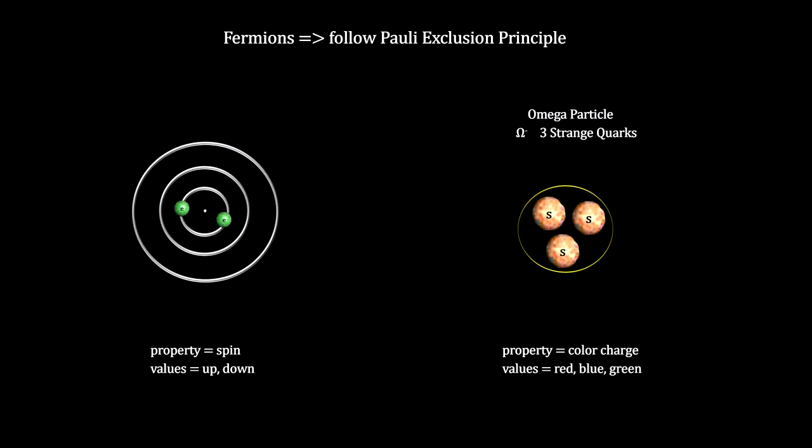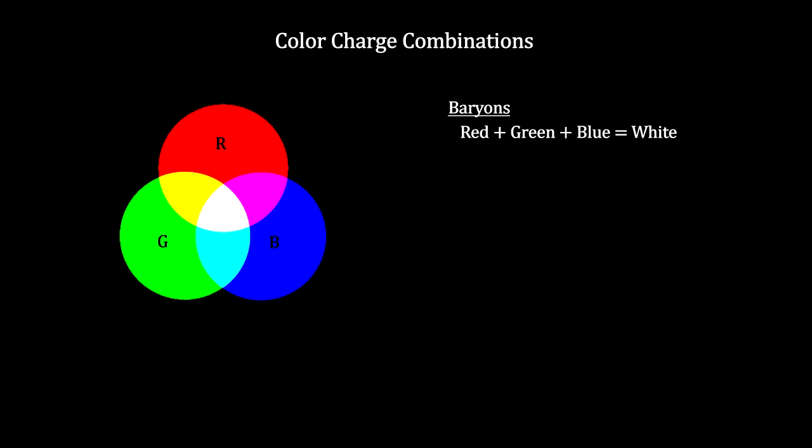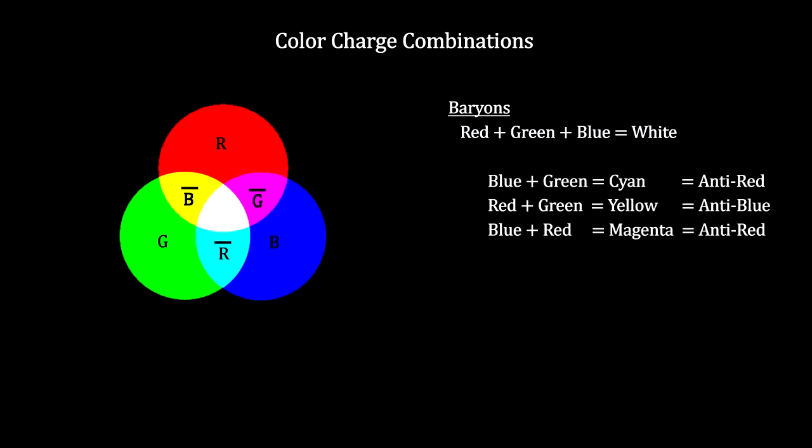The fact that no charge has ever been seen in the mesons and hadrons made from quarks indicates that the three charge colors neutralize each other in these configurations. This led to the idea to use red, green, and blue because they neutralize each other when combined. Our rule for allowing quark combinations was that they had to add up to a whole unit of electric charge. We can now add the rule that they have to add up to no color charge at all.